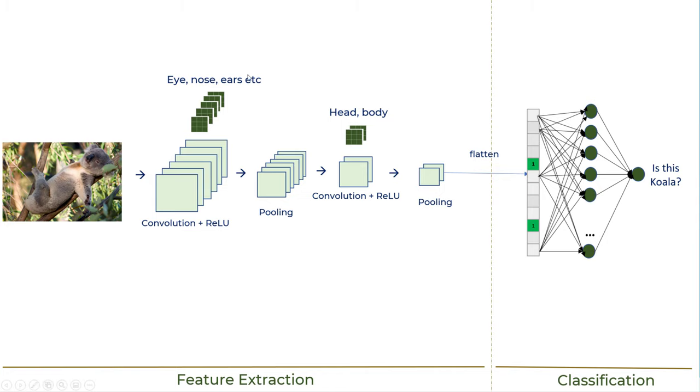And in the end, you will have fully connected dense neural network. In this particular case, the first convolution layer is detecting eye, nose and ears. Many times, you will start with the little edges. You don't even start with eye and nose. But here for the simplicity, I have put them. But usually, you will start with edges. Then you go to eye, nose, ears. Then you go to head and body. And then you do flattening.